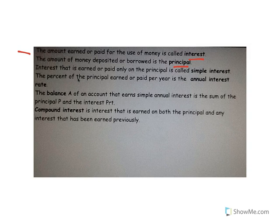Interest earned or paid only on the original amount — the principal — is called simple interest. So if you deposit $50 in the bank at 1%, you get the same amount every year. The percent of principal earned or paid per year is the annual interest rate. The balance is the amount in the account after interest has been paid. Compound interest is more complicated because interest goes back into the account, and the next year you earn interest not only on the principal but also on the accumulated interest.